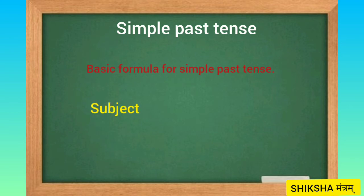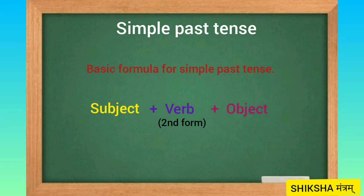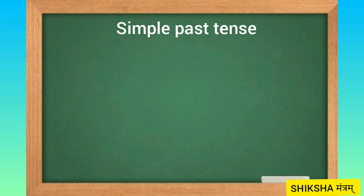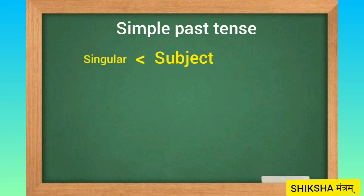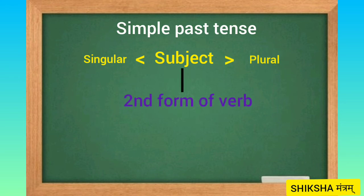Now the basic formula for simple past tense: Subject plus second form of the verb plus object. The subject may be singular or plural — in both cases we use the second form of the verb. Then we add the object.